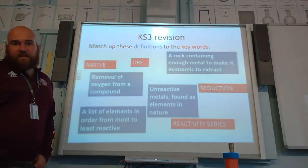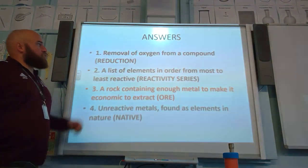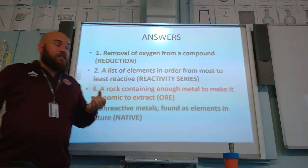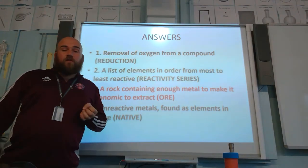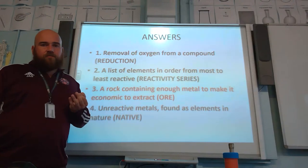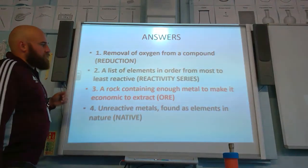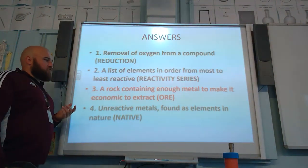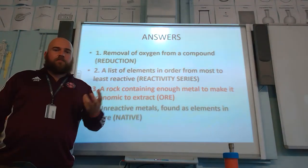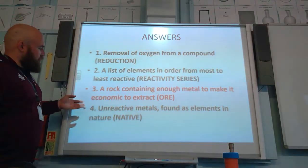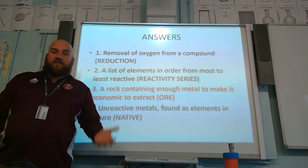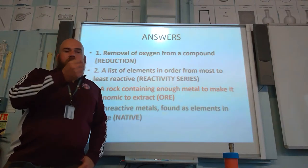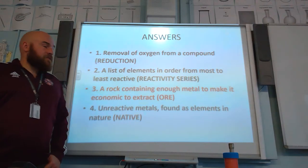So hopefully you've had a decent go at that. Let's review the answers. Removal of oxygen from a compound - reduction. In the previous lesson we also said that reduction is gaining of electrons. There are actually three definitions of reduction: gaining of electrons, removal of oxygen from a compound, and addition of hydrogen. A list of elements in order from most reactive to least reactive is the reactivity series of metals. A rock containing enough metal to make it economic - change the word economic to profitable - will you make a profit so that extraction is worthwhile? That's an ore. And unreactive metals found as elements in nature - native. Things like gold, because of its low reactivity, you can find it as gold chunks or gold granules when panning for it, as was done back in the 1800s in Western America.